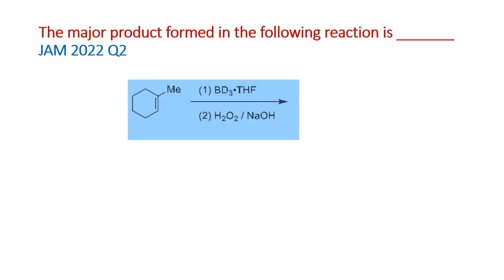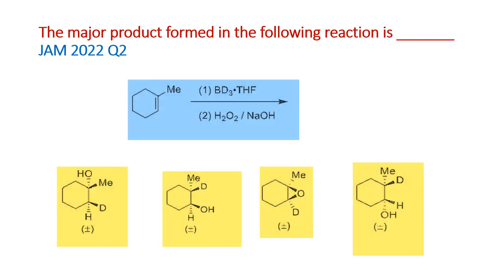The question asks which is the major product. A reaction sequence is given along with a list of products shown as a set of stereoisomers. Notably, here it is not given as BH₃, rather it is given as BD₃, where D is the heavier isotope of hydrogen. Otherwise, it is a simple hydroboration oxidation reaction.